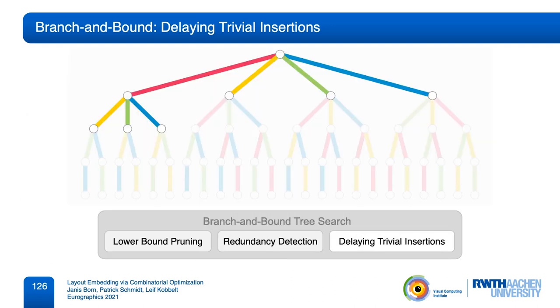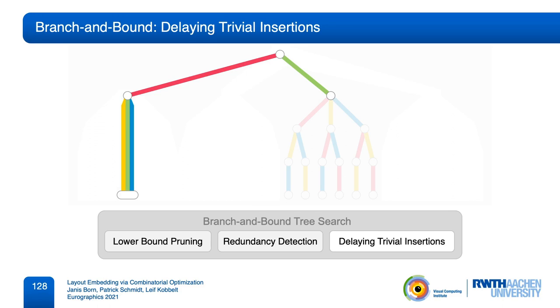Looking at the decision tree, this strategy has two positive effects. By considering only conflicting edges as children, we greatly reduce the branching degree. And by allowing the simultaneous insertion of non-conflicting edges, we can reach leaf nodes with completed embeddings without resolving redundant permutations.